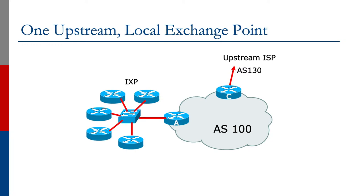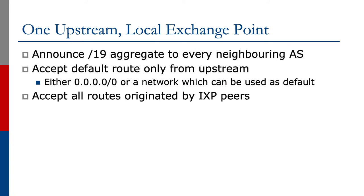So how do we configure all of this? We're going to announce the /19 aggregate to every neighboring AS, as before. We will accept the default route only from the upstream provider — we don't need the full BGP table. And we accept all routes which are originated by the Exchange Point peers.